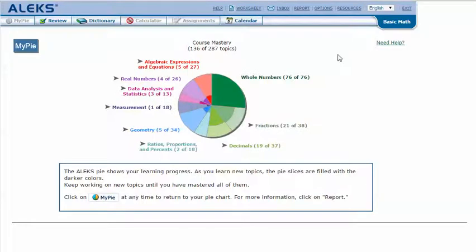In your AlexPie, mouse over the dark green slice, whole numbers, to reveal the drop-down list of topics you need to cover. Click on evaluating an algebraic expression, whole numbers with two operations.